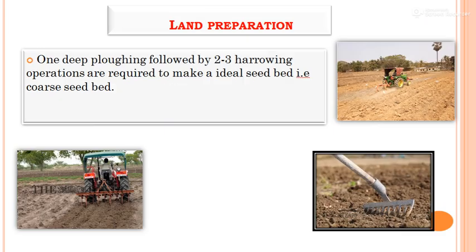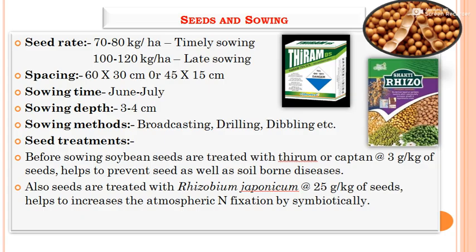For land preparation and season sowing, the seed rate required for timely sowing is 70 to 80 kg per hectare, and for late sowing it is 100 to 120 kg per hectare. A higher seed rate for late sowing is needed to avoid seedling mortality due to increased soil temperature or reduced soil moisture, in order to maintain optimum plant population. Spacing required is 60 x 30 cm or 45 x 15 cm.